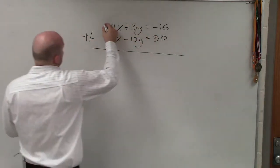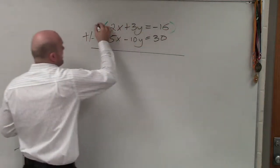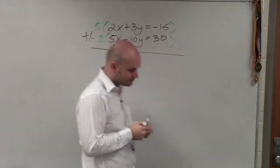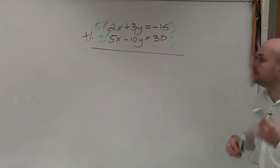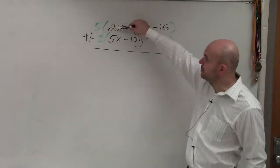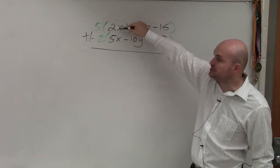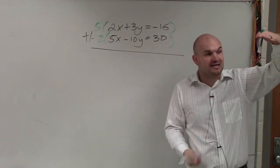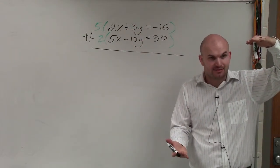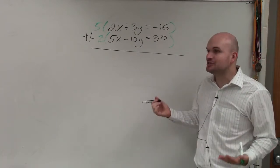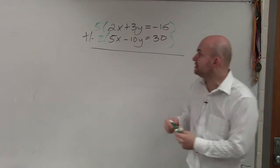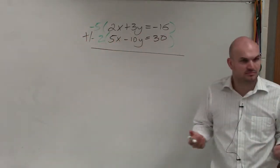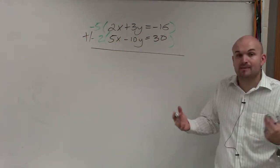Now, the one thing I want you guys to understand is, notice how my two coefficients are already positive. When you're adding equations, one has to be positive and one has to be negative, correct? So basically, to create that, all I simply need to do is make one of my multipliers negative. So if I make one of my multipliers negative, now when I multiply...